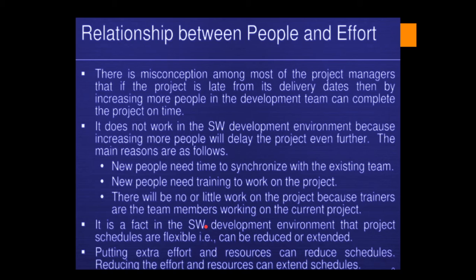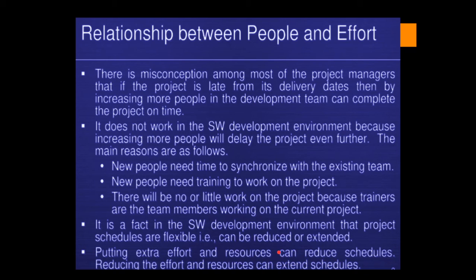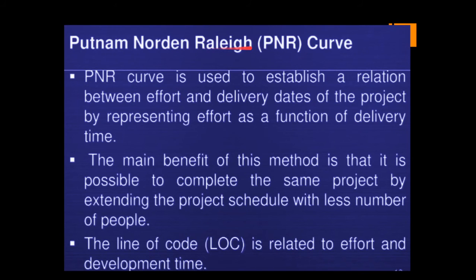In software development, project schedules are flexible — they can be reduced or extended. Putting extra effort and resources can reduce the schedule, and reducing effort and resources can extend it. That is what the study done by the Putnam-Norden-Rayleigh (PNR) curve shows. This PNR curve is used to establish a relationship between the effort and the delivery dates of the project by representing effort as a function of delivery time — focusing on how early the project can be delivered.